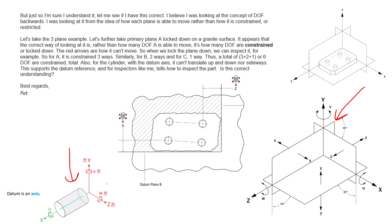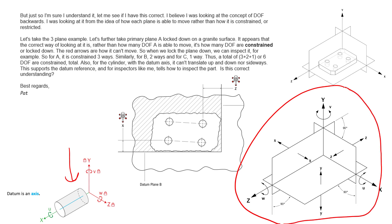The cylinder with the datum axis: it can't translate up, down, nor sideways. This supports the datum reference, and for inspectors like me tells me how to inspect the part. What you're trying to do — let's go through the basics here — is you're trying to get your part to align to this grid right here to create these three planes around your part. This is just one way to think about it.